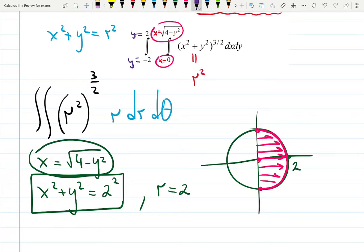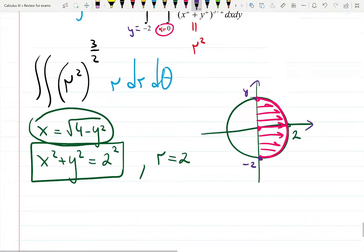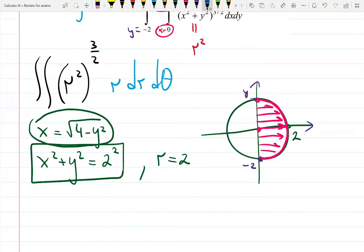Y is changing from minus 2 to 2, which is exactly what matches here. How to describe this in polar? Very easy. Radius, as we already mentioned, stuck between 0 and 2.